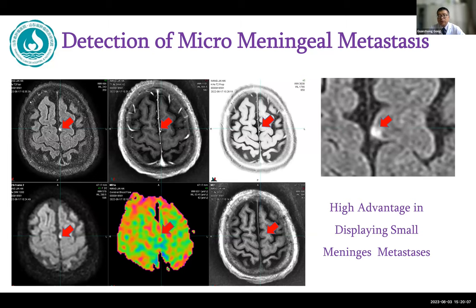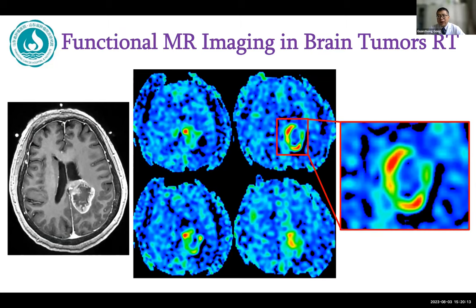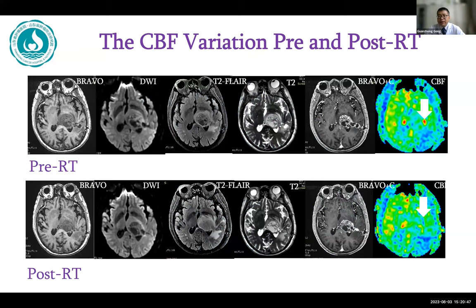The enhanced contrast T2 FLAIR images have a very high advantage in displaying small metastases of malignant tumors. This has become a routine sequence in our brain MRI simulation. We have also tried new imaging sequences for radiation therapy, such as 3D ASL. For a patient with glioblastoma, the difference in perfusion can be clearly seen through 3D ASL, which can guide us in delineating sub-target volumes. The 3D ASL CBF comparison of pre- and post-radiation therapy shows a significant decrease in high perfusion areas of the tumor after radiation therapy.